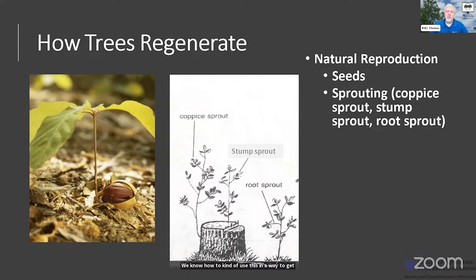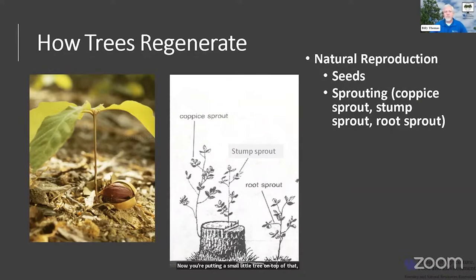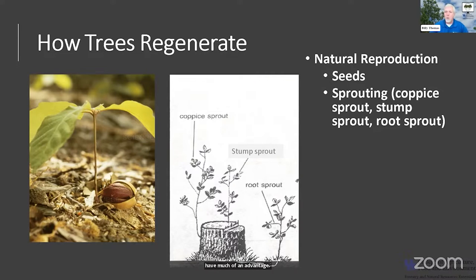Certain species have more aptitude to sprout than others. This allows us to take advantage of regeneration when trying to regrow a woodland. When you use sprouting, think about that root system that existed underground — now you're putting a small tree on top of it with a huge root system, so it's going to grow exceptionally fast. Whereas a small seedling like this little acorn on the left doesn't have much root system, so it won't have much of an advantage. Sprouting gives a much greater speed of occupying that site.